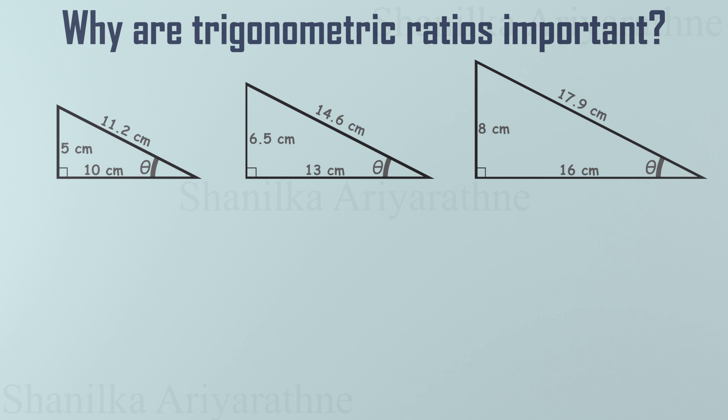First up, let's calculate the sine ratio: opposite divided by hypotenuse. For the first triangle, 5 divided by 11.2 equals 0.45. For the second triangle, 6.5 divided by 14.6. Yep, still 0.45. For the third triangle, 8 divided by 17.9, guess what? Also 0.45, all the same. Pretty interesting, right?